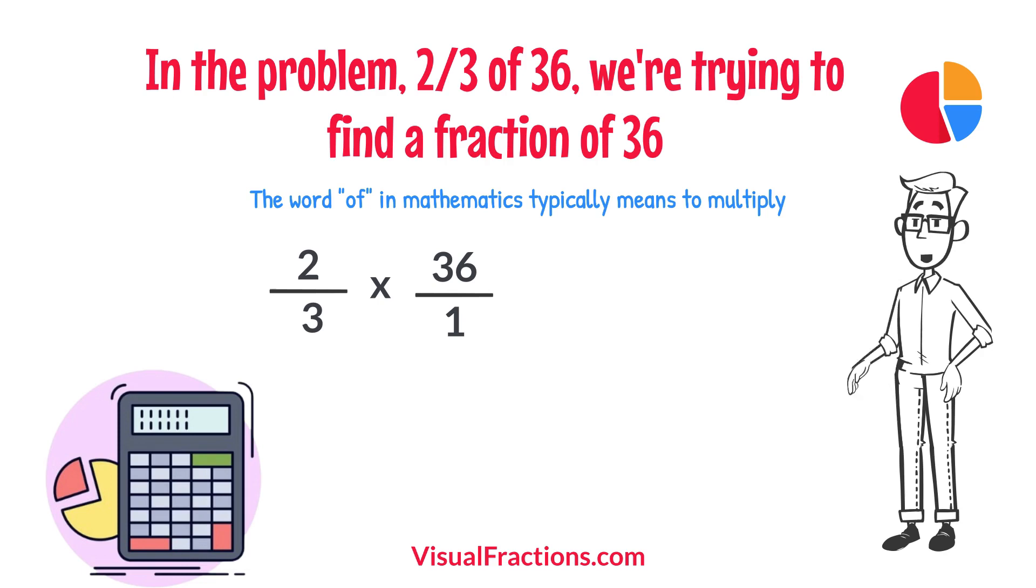Now, we proceed to multiply across. First, multiply the numerators, 2 times 36 equals 72.